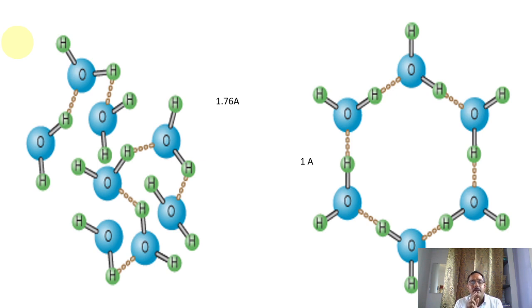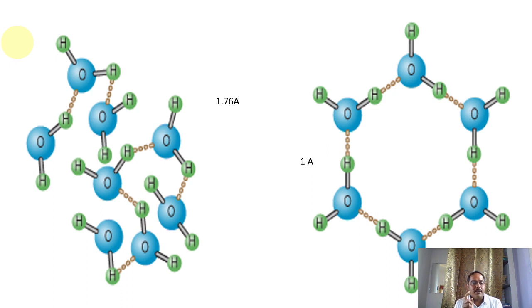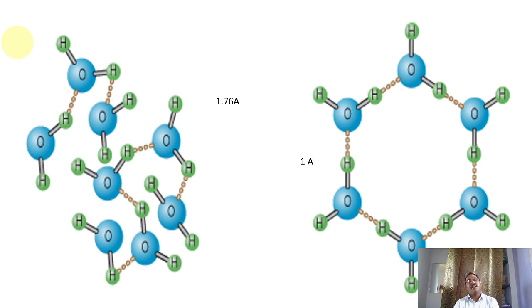The left image shows water molecules in liquid form; the right image shows water molecules in solid form. In solid form, the molecules are very intact and there are fewer molecules per unit volume. In liquid form, there are more water molecules per unit volume, therefore it has more density. Water upon cooling forms a solid which we call ice. Ice floats over water.